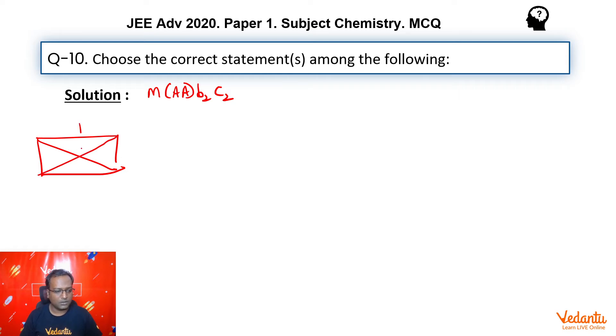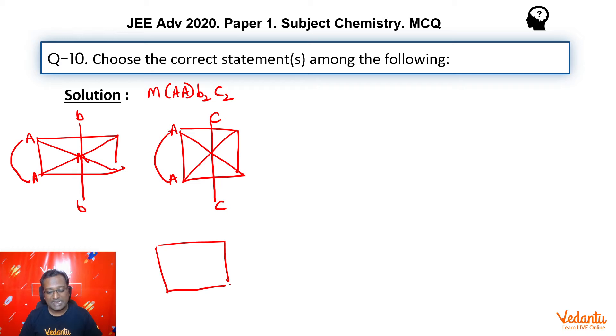So, this is your octahedral system. We are placing A, A here, permanent. We will not move it from there. Now, we have to place B2 and C2. So, one option is that B2 goes trans. The other option is that A, A we keep fixed but now C2 goes trans. And so, there is another option available. None go trans. That is, both of them go cis.